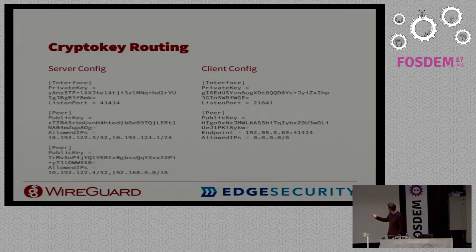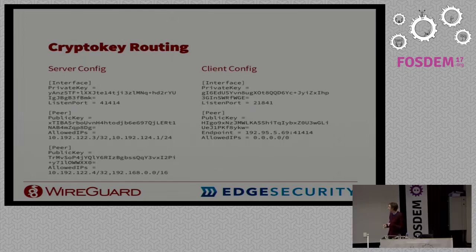You'll notice that the server doesn't list any endpoints of the peers because it doesn't know them — it's the server, waiting for clients to connect. But whenever the server gets an authenticated message from a client, it learns the latest endpoint of that client for sending reply packets. So clients can roam freely from different source IP addresses — if you've ever used MOSH, it works exactly like that.